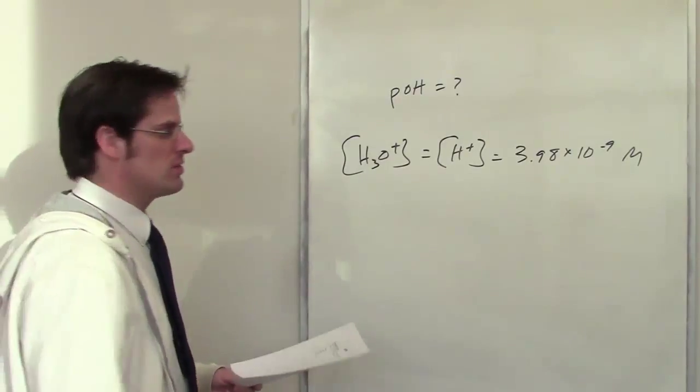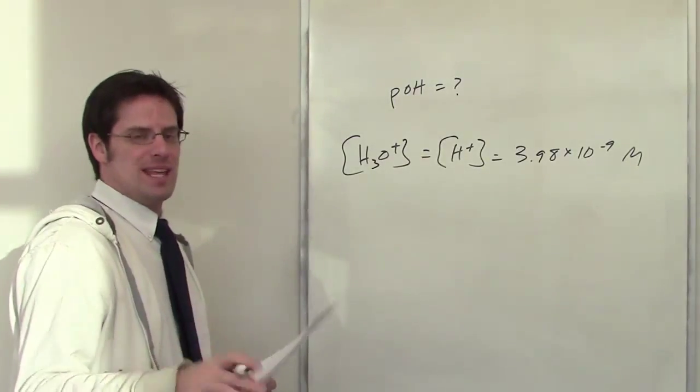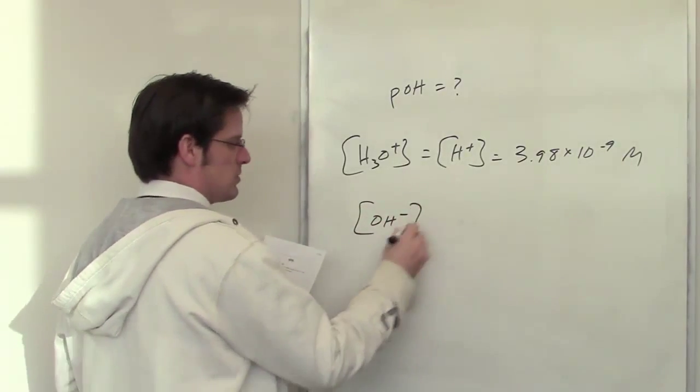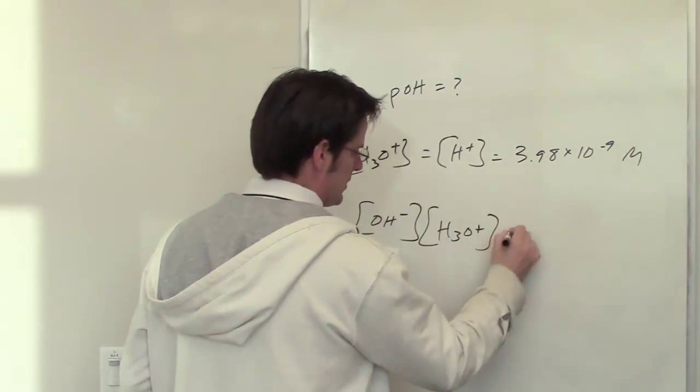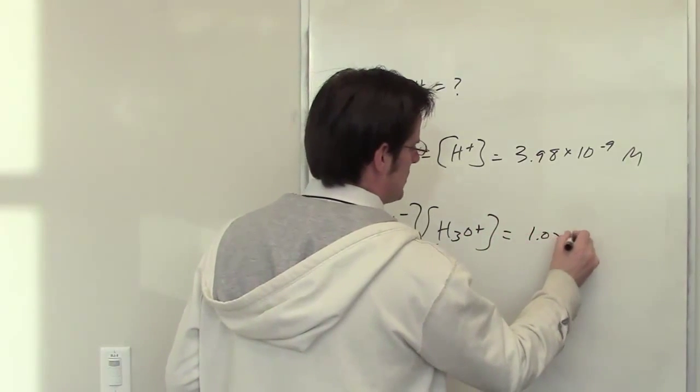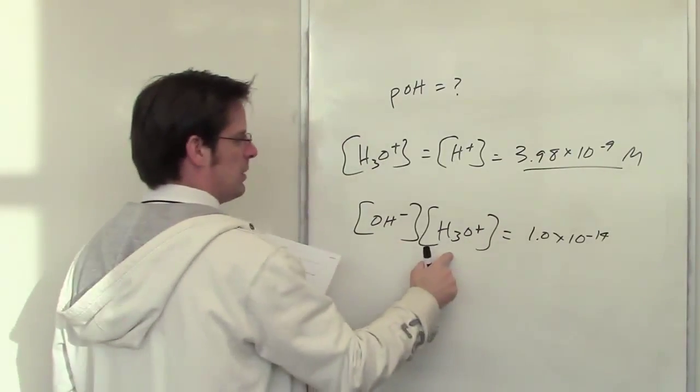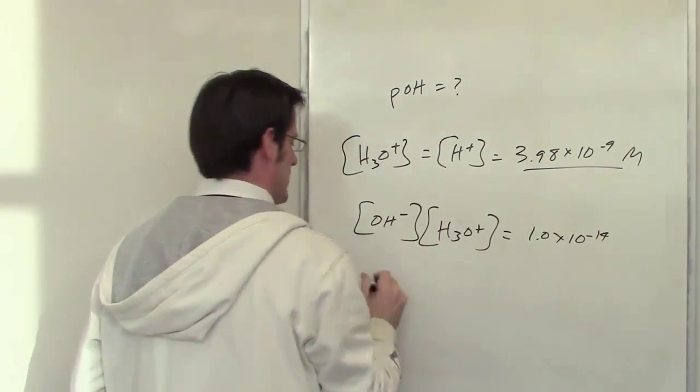There are a couple different ways of doing that. One way is remembering the equation that says the concentration of hydroxide, OH minus, multiplied by the concentration of hydronium H plus is equal to 1 times 10 to the negative 14th. I've got my number for H3O plus. I just throw it in here and solve for OH minus.